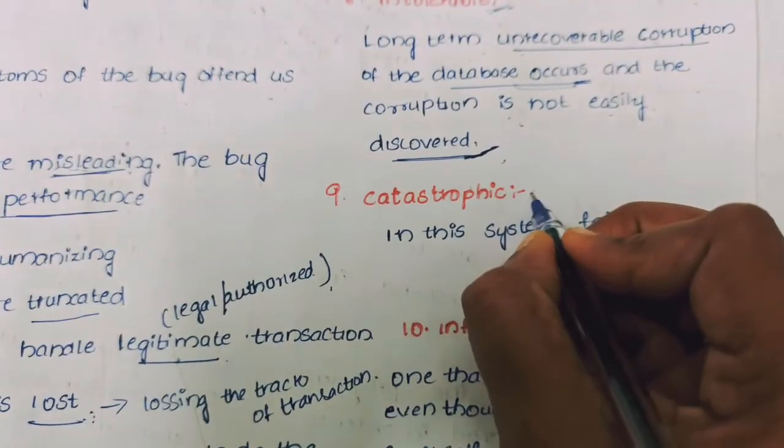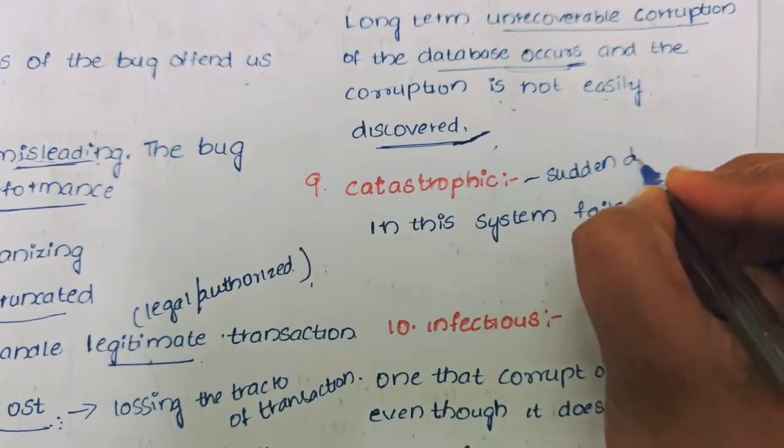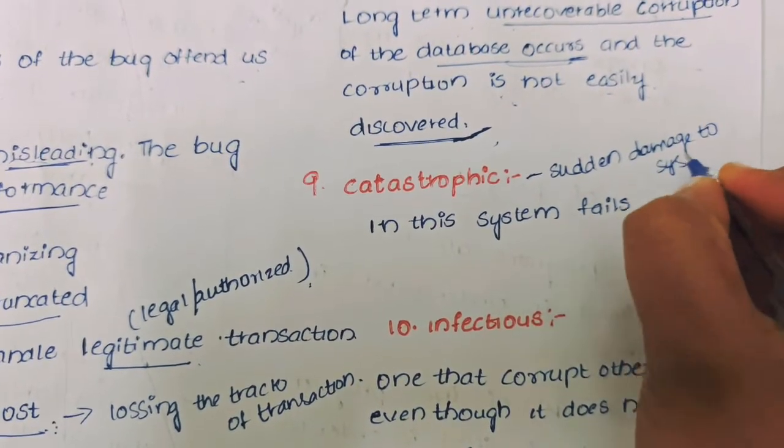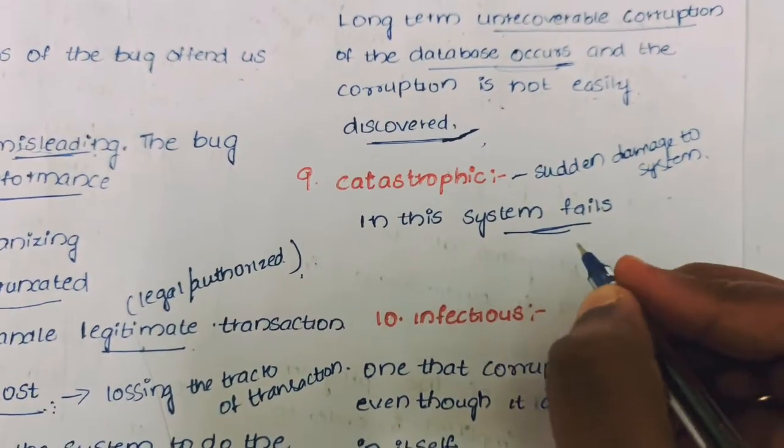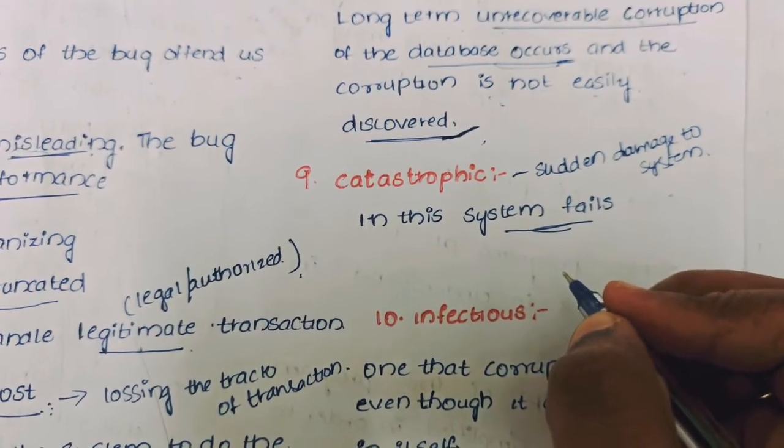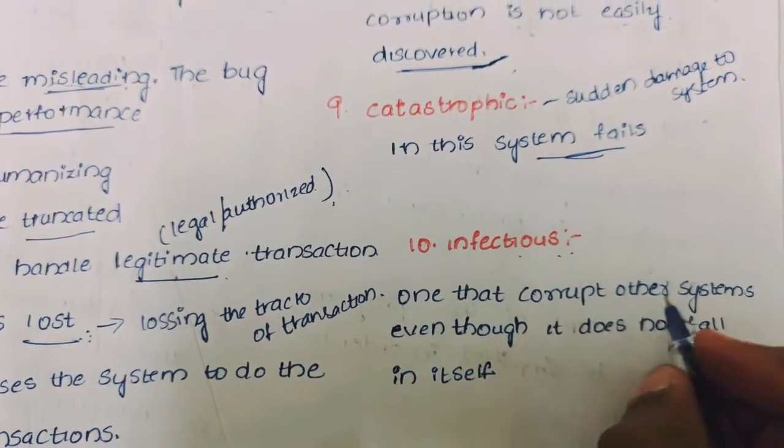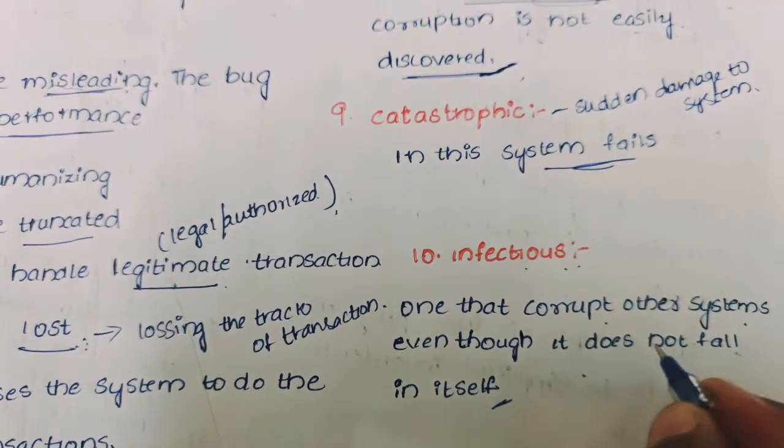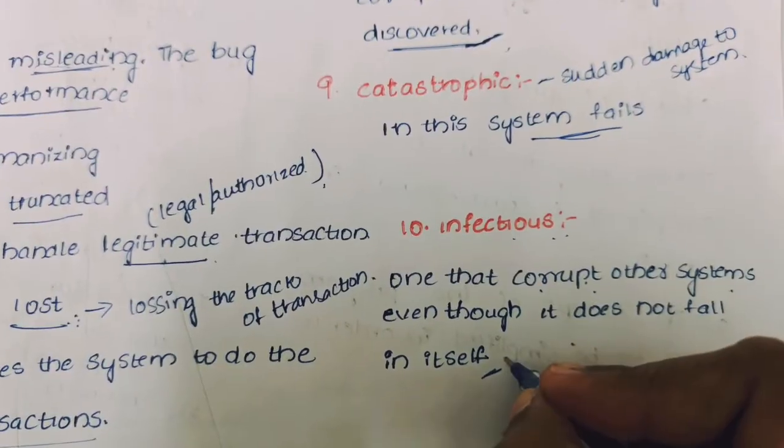Catastrophic, which is nothing but sudden damage to the systems. In this, mostly system fails. And last 10th one, infectious: one that corrupts other systems and it does not fail itself, which is nothing but it corrupting the other system, not the system itself.